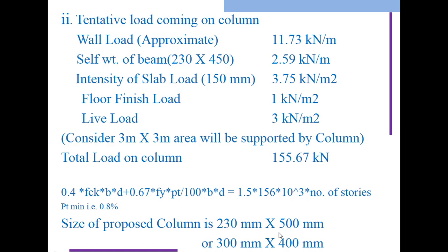Tentative load coming from the column: wall load approximately 11.73 kN per meter acting per meter of wall. Self-weight of beam (230 by 450 size) is 2.59 kN/m. Intensity of slab (150 mm thick) is 3.75 kN/m², floor finish is 1 kN/m², live load is 3 kN/m². For a 3 by 3 meter area supported by column, total load is 155.67 kN. These load calculations we'll discuss throughout the course.